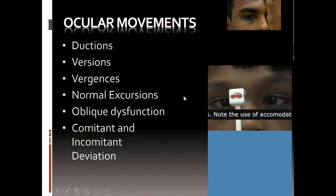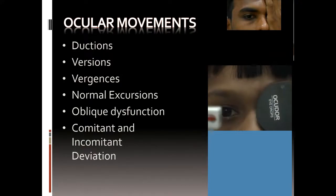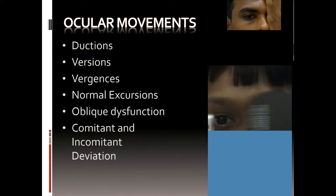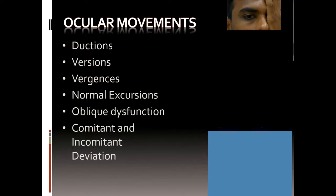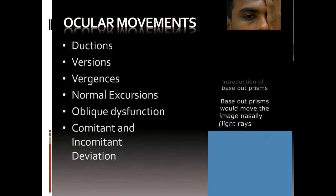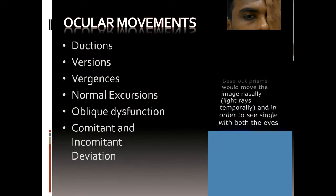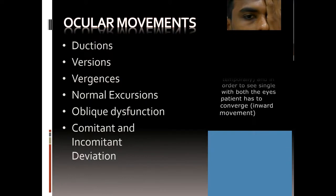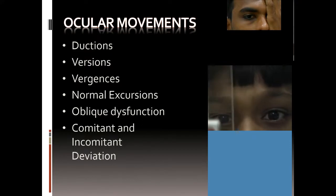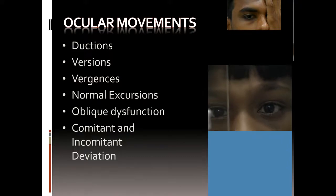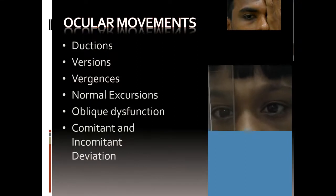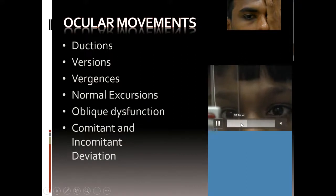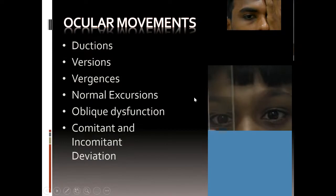When you put a base-out prism, you are trying to move the eye outward and the patient has to converge back to overcome that prism. So you put base-out prisms for convergence and base-in prisms for divergence. Once you reach the point where the patient starts seeing double, that is the breaking point. You reduce it from there. What I have done in the video is done an alternate cover test and then gradually watched his right eye — it keeps on coming inside the moment I increase the prism.